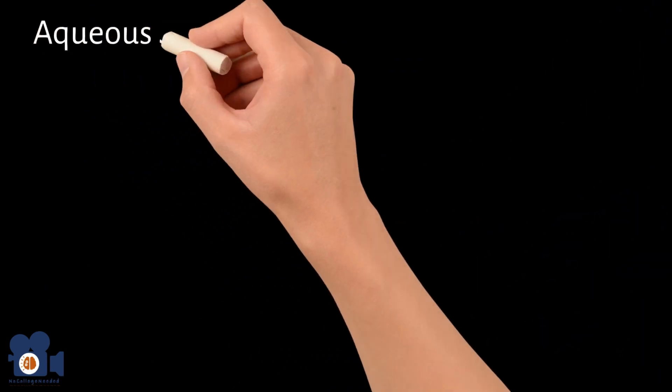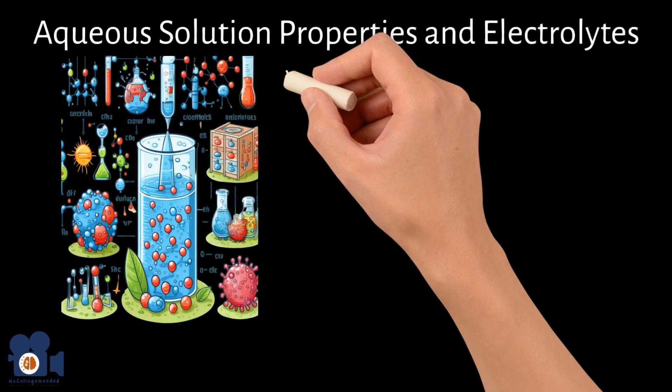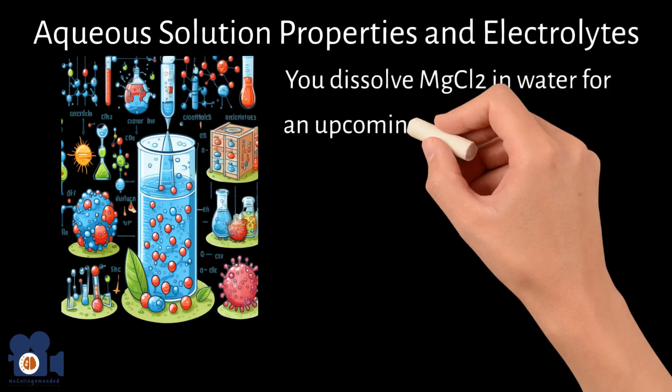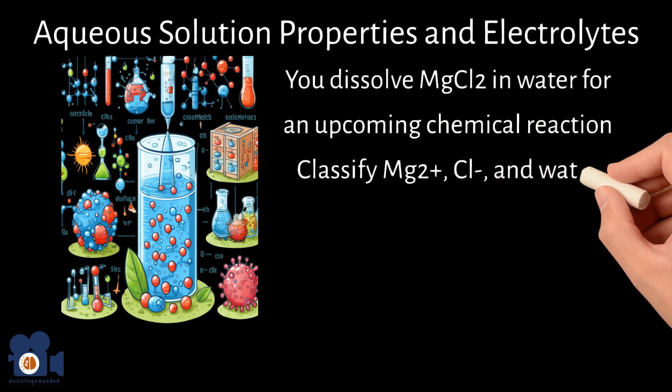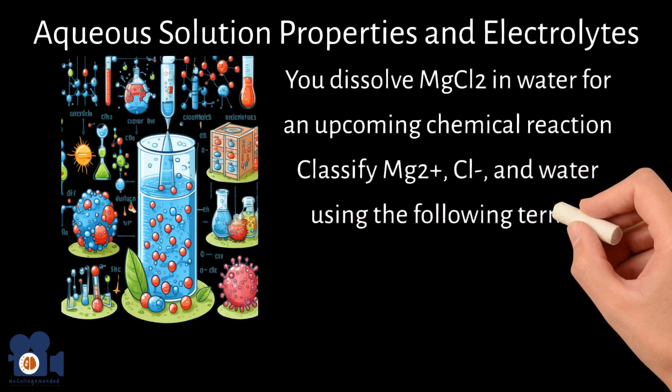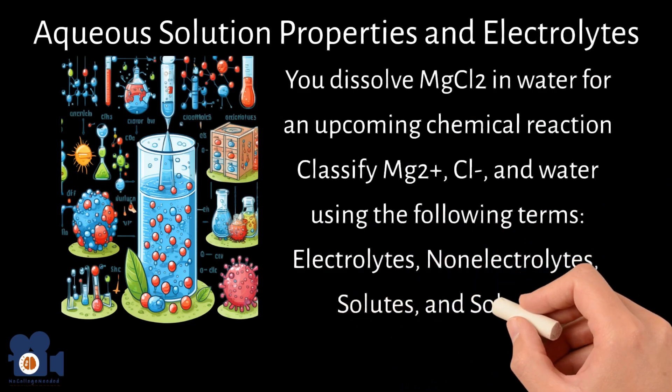Pertaining to Unit 4.1 with aqueous solution properties and electrolytes, let's say you dissolve MgCl2 in water for an upcoming chemical reaction. Classify the Mg2+, Cl- and water using the following terms: electrolytes, non-electrolytes, solutes, and solvents.